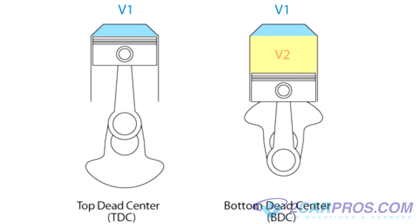The next thing we need to talk about is compression ratio. The compression ratio of an internal combustion engine is the value that represents the ratio of the volume of its combustion chamber from its largest capacity to its smallest capacity. This is a fundamental specification for any common combustion engine. A high compression ratio is desirable because it allows an engine to extract more mechanical energy from a given mass of air-fuel mixture due to its higher thermal efficiency. So basically, higher compression ratio equals more power.